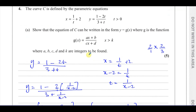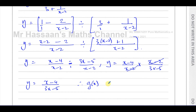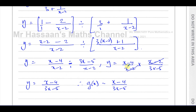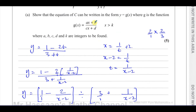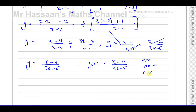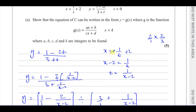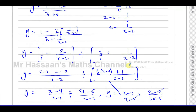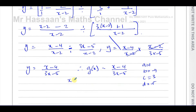So we can write g(x) equals x minus 4 over 3x minus 5. Identifying the constants: a equals 1, b equals minus 4, c equals 3, and d equals minus 5. Now we just need to find k, the value such that x is greater than k — this represents the domain of the function.